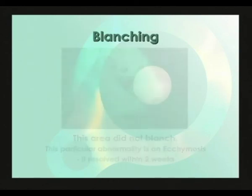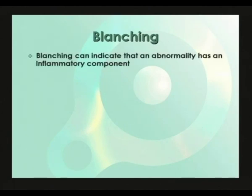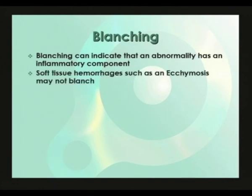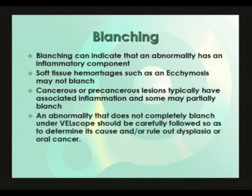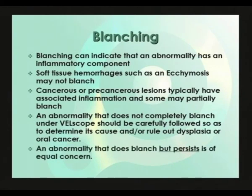Here are some important things to remember about blanching. Blanching can indicate that an abnormality has an inflammatory component. Soft tissue hemorrhages such as an ecchymosis may not blanch. Although we might expect a precancerous or cancerous lesion not to blanch because of the associated intrinsic loss of fluorescence, we must remember that cancerous or precancerous lesions typically have associated inflammation and therefore may partially blanch. The bottom line is that an abnormality that does not completely blanch under VELscope should be carefully followed to determine its cause and rule out dysplasia or oral cancer, and an abnormality that persists without completely blanching is of equal concern.